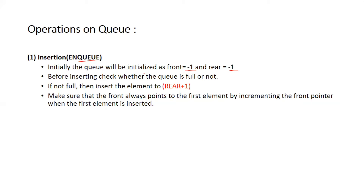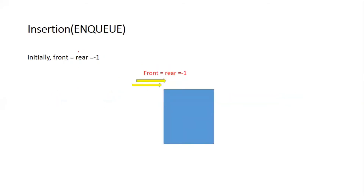Before inserting, we check if the queue is full. If not full, we insert the element at the rear plus one position, so rear becomes rear plus one. Initially, rear is minus one, so minus one plus one gives index zero — the zeroth index. We make sure the front always points to the first element by updating the front pointer when the first element is inserted at index zero.